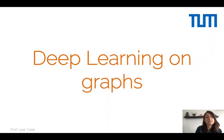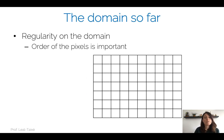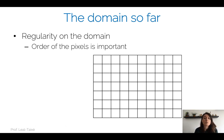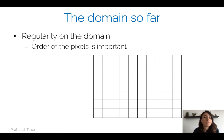Welcome to the lecture on deep learning on graphs. Today we're going to move a little bit away from the domain we have seen so far. We have worked a lot on images, which is a very regular domain. The order of the pixels is really important — for example, whether the eye and the nose are at a certain location matters. There is a certain regularity: neighbors are always placed on the same positions, and the order is also important.